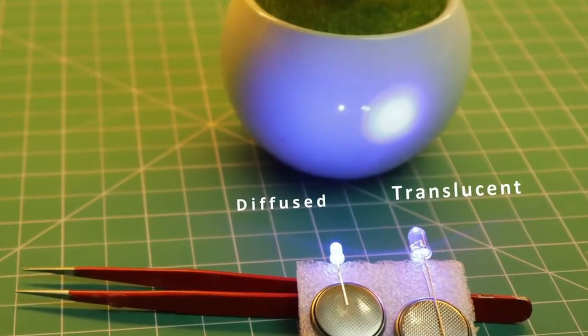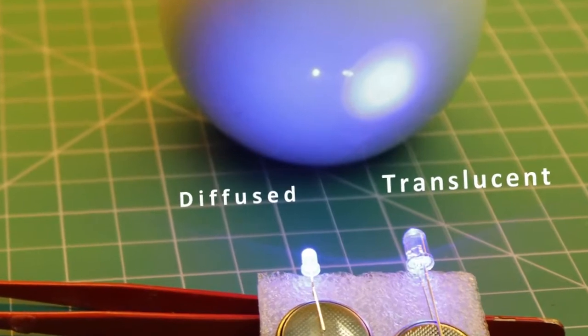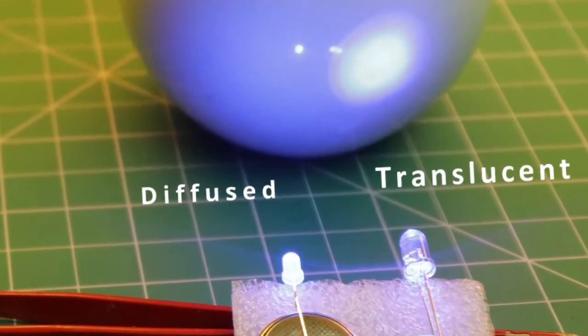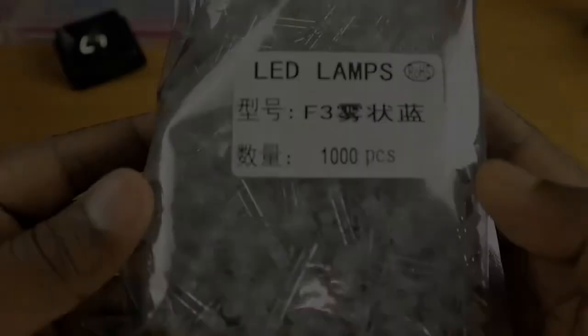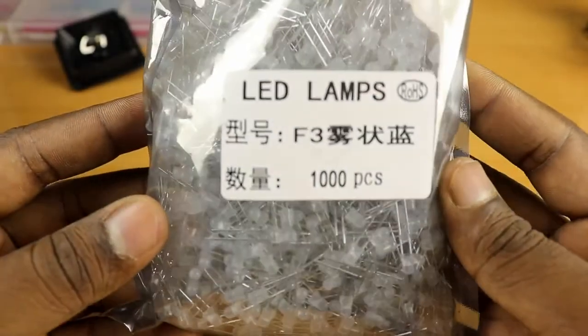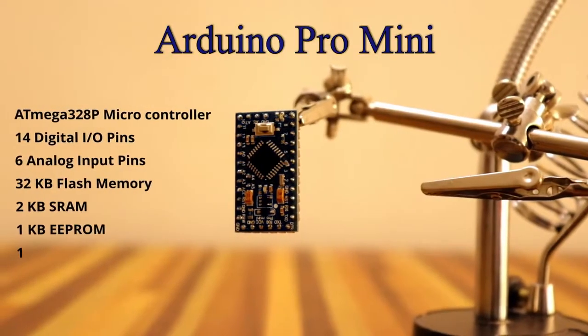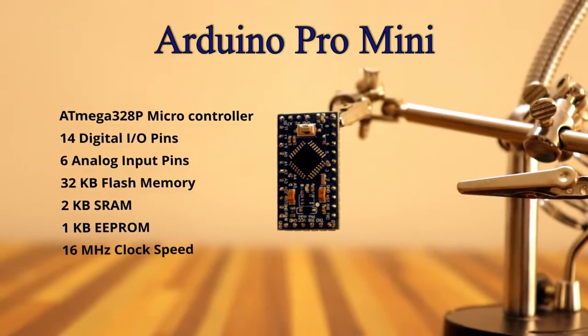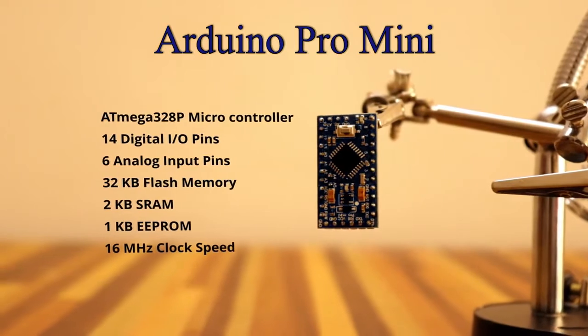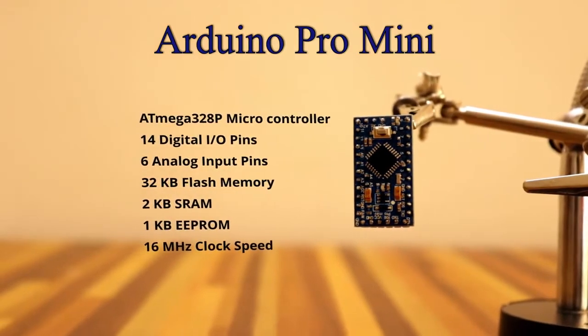The LED light will be scattered using diffused LEDs. We'll use a blue color LED pack — a 5mm LED. To control the LEDs and use different patterns in this cube, we can use an Arduino Pro Mini microcontroller board. We can use 21 pins.